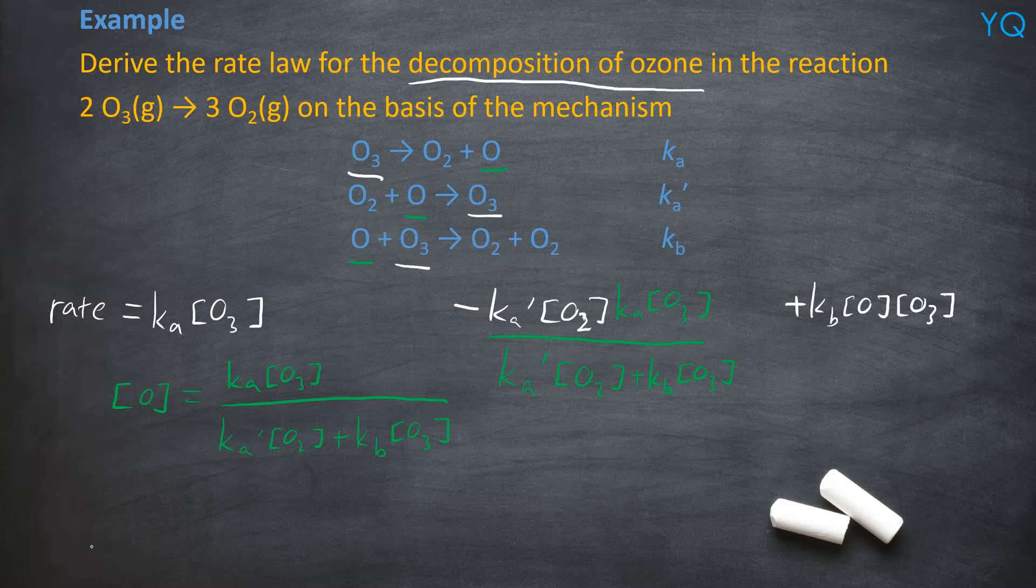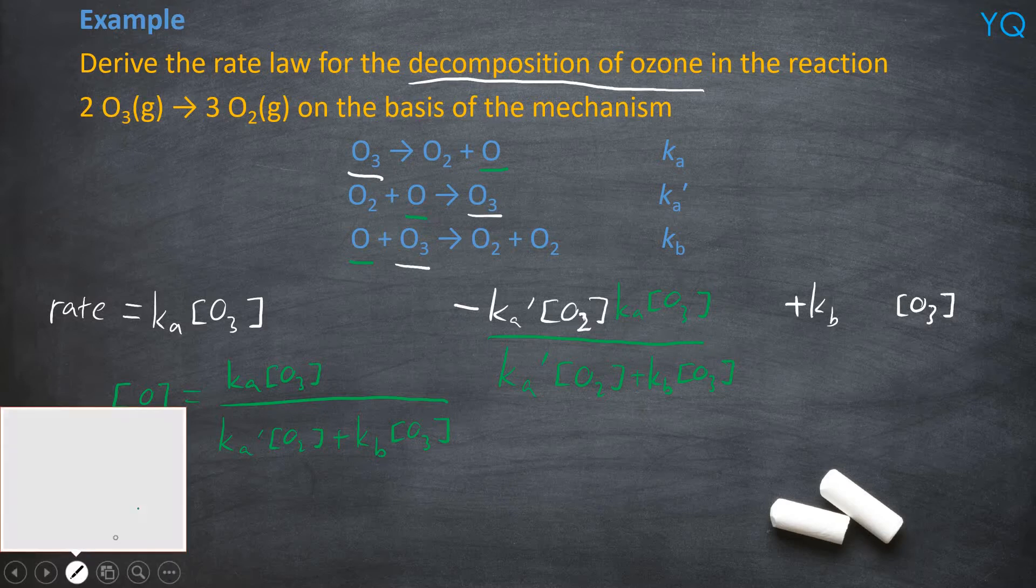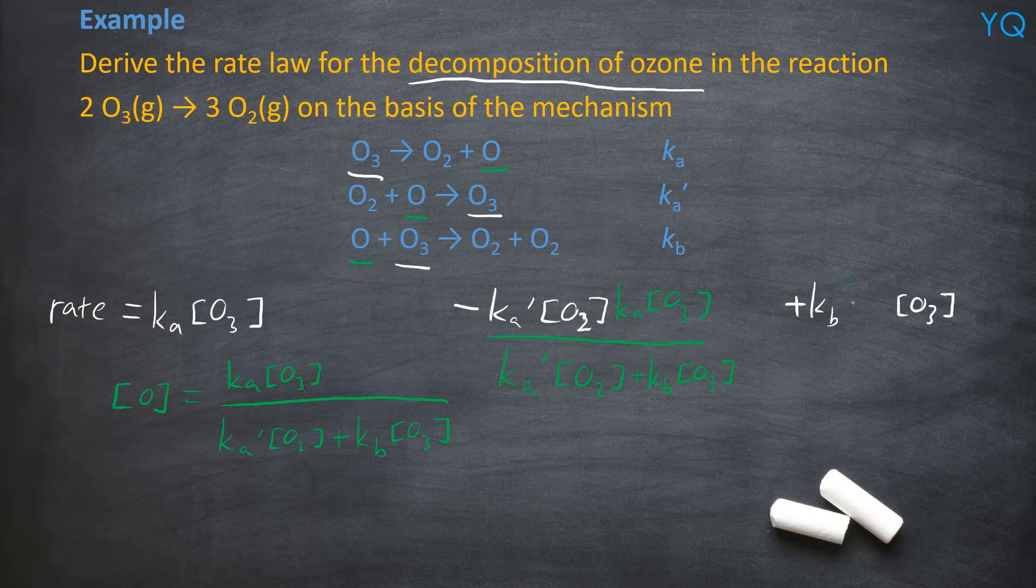So this O also is substituted with the green equation. So you remove it. So you remove it. You add Ka O3 divide by Ka prime O2 plus Kb O3.